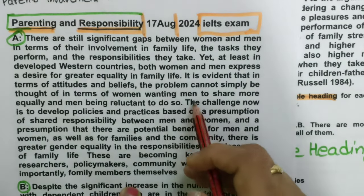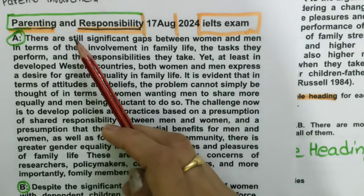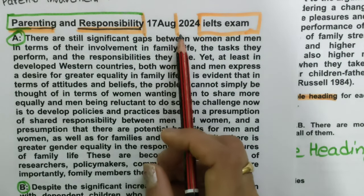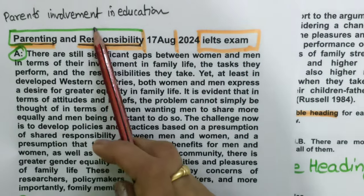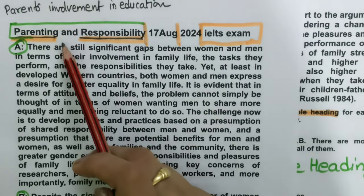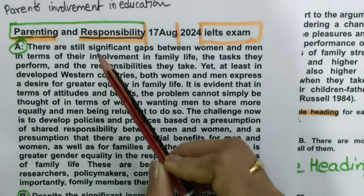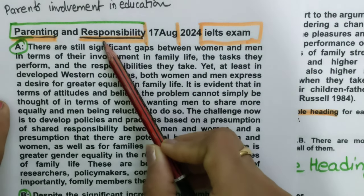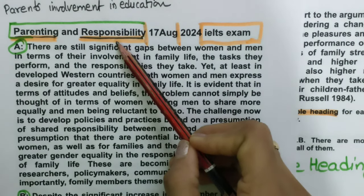Hello everyone, I am Monica from IELTS 9. This reading was reported in the 17th August 2024 IELTS exam. The reading was relating to parents' involvement in education. I have got this reading titled 'Parenting and Responsibility,' and we will understand the title of this reading — Parenting and Their Responsibility.